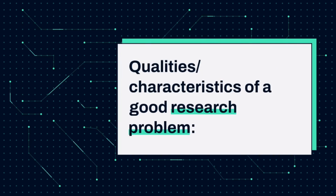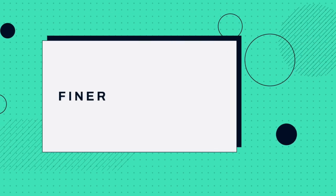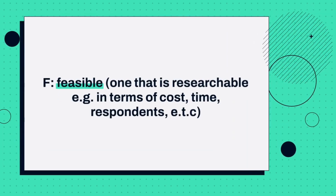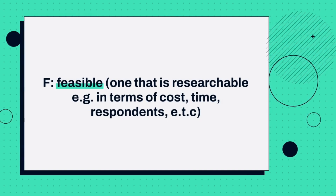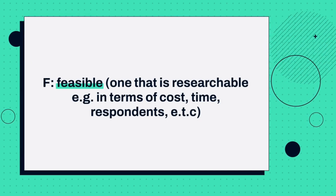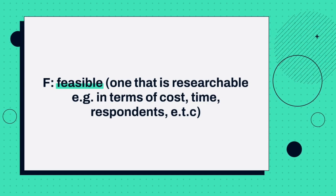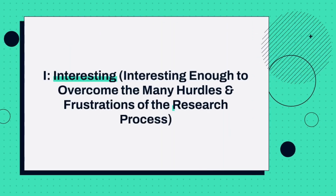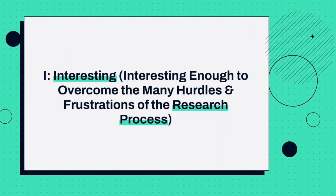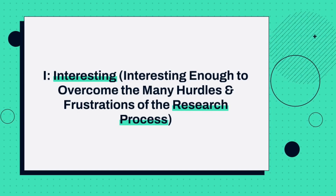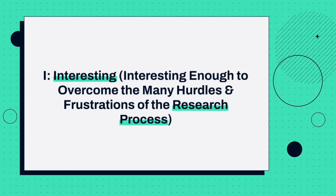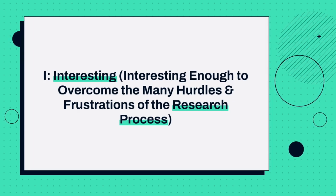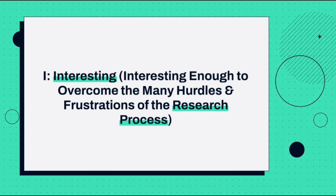Now let's look at the qualities or characteristics of a research problem. We use the acronym FINER. F stands for feasible, meaning the research problem should be researchable in terms of cost, time, and respondents — in other words, it should be doable. I stands for interesting, meaning it should be interesting enough to overcome the many hurdles and frustrations of the research process. For example, if a research problem is in your area, it will be interesting because you already have knowledge about the problem.